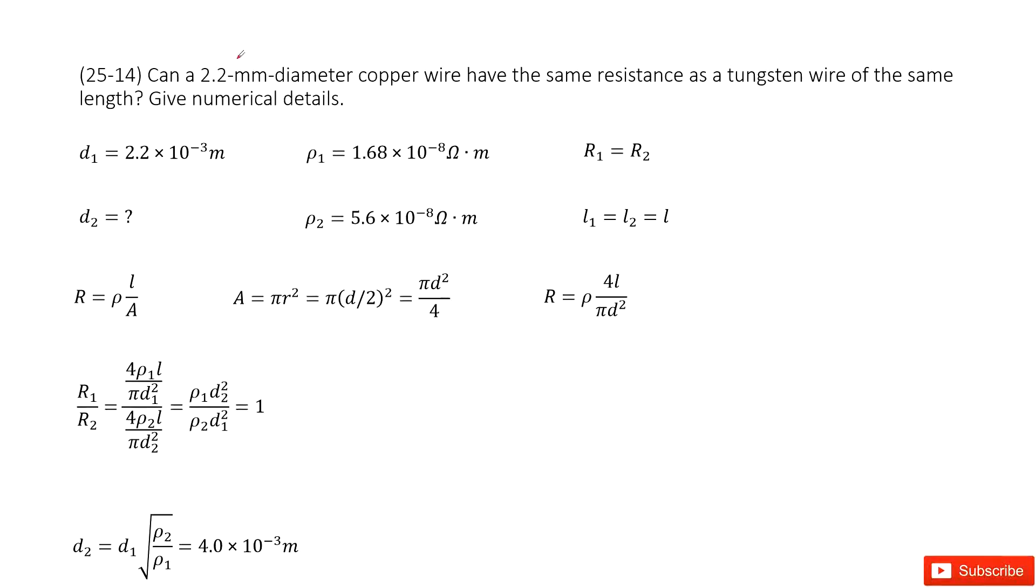First one tells us resistor 1, the diameter. So we write it as D1. We list the quantities there. And then it tells us it's copper wire, so the R1, we can list it there.